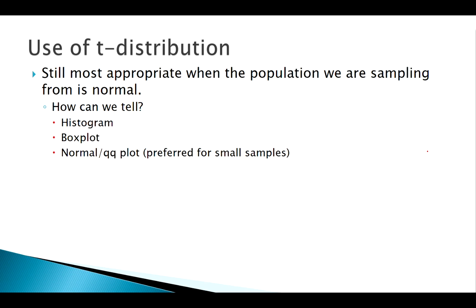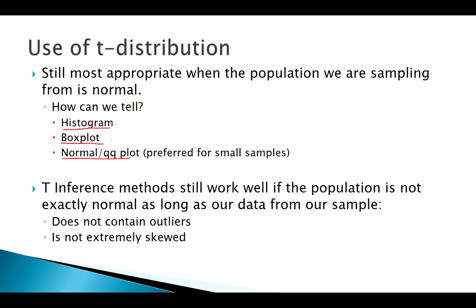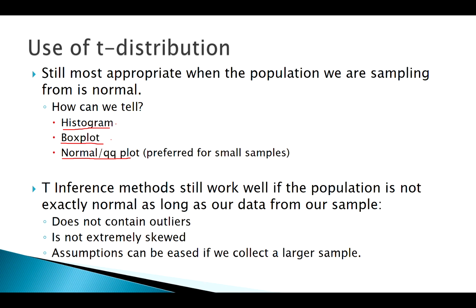To summarize when to use T: we use it when we don't know Sigma, especially for smaller sample sizes, but we also want the population we're sampling from to be approximately normal. We check for no skewness in a histogram, no outliers in a box plot. A QQ plot or normal probability plot gives us all of this at once. Technically, as sample size gets bigger we don't have to be as strict about these assumptions.